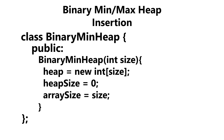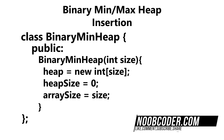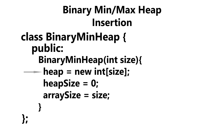Moving on to our one-argument constructor: we get passed in the size, which is the size of our array. We then use that size to dynamically create our array. We then set our heap size to zero, since there are zero elements within our array, and we initialize our array size to the size that was passed in.